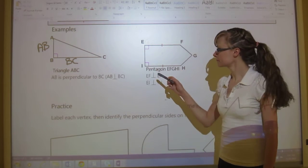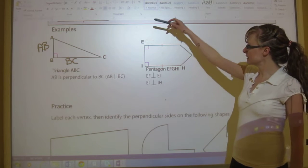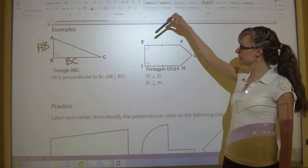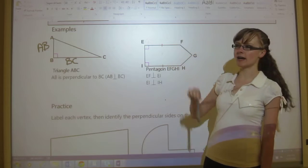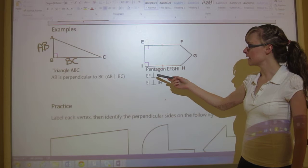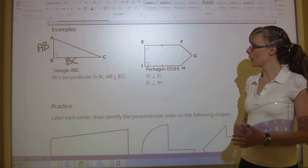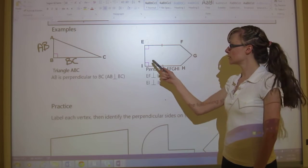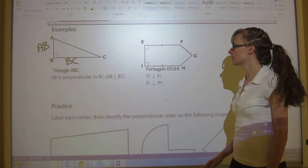So pentagon, and we started here and it's going around. So pentagon EFGHI is its name. It's right here, it's named. And then the parts that are perpendicular are shown with the pink squares on the paper.